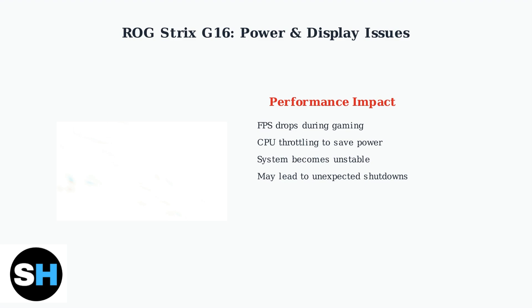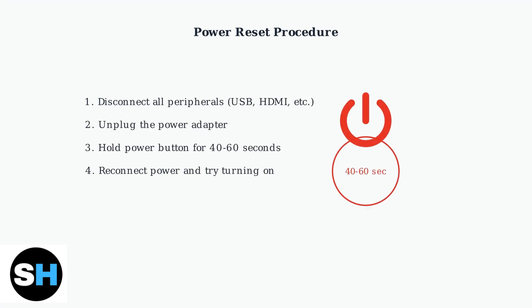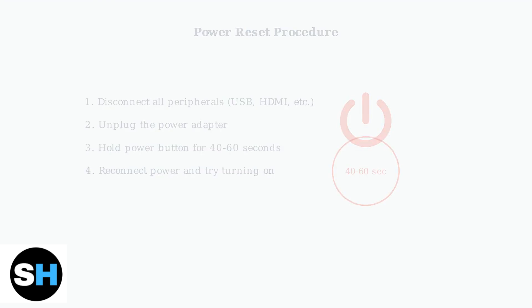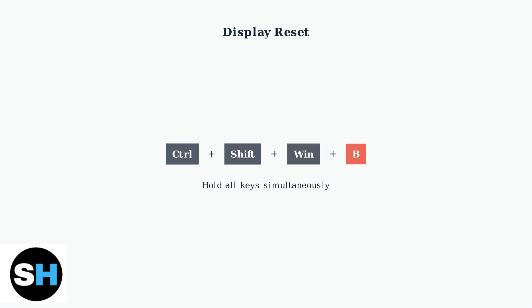If problems persist, more advanced hardware diagnostics and repairs may be necessary. The first and most effective fix is a complete power reset, which clears any residual power and resets the system's internal state. For display-related issues, try the Windows Display Reset shortcut, which can resolve screen problems and system unresponsiveness.